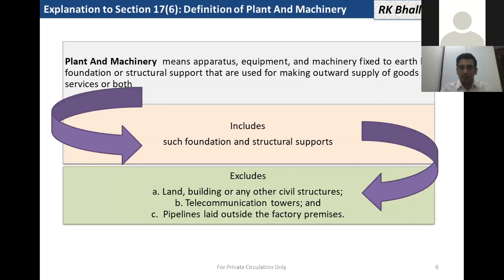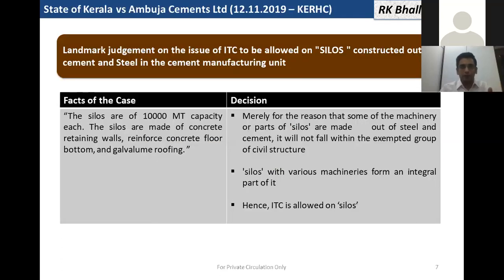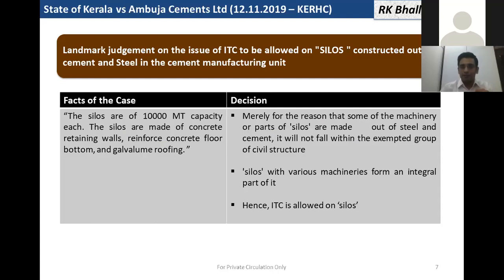Let us discuss a few case studies on whether something qualifies as plant and machinery or not. In the case of State of Kerala versus Ambuja Cements, the cement manufacturer had huge silos with capacity up to 10,000 metric tons. These were part of the machineries but the silos were constructed with cement and steel. The High Court gave a landmark decision and said that merely because some machinery or part of the silos are made out of steel and cement, this does not mean it becomes a civil structure. If it is a plant and machinery and steel and cement are used, input shall still be allowed. So silos form an integral part of plant and machinery, and input was allowed in this case.